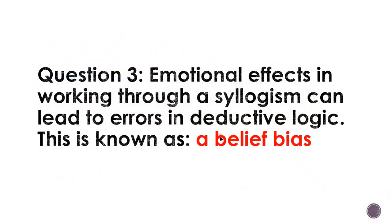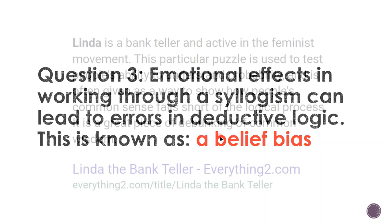So now you understand that emotional effects in working through a syllogism — which is something you arrive at with two premises — can lead to errors in deductive logic. For example, if you're given two premises that you don't necessarily believe in, that will lead to errors in deducing the syllogism correctly. That is known as a belief bias — you may have a predisposed way of thinking about things.